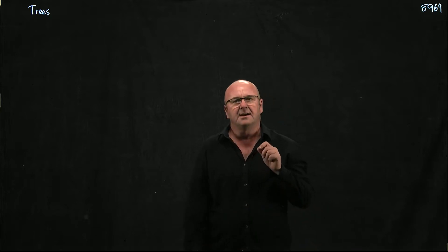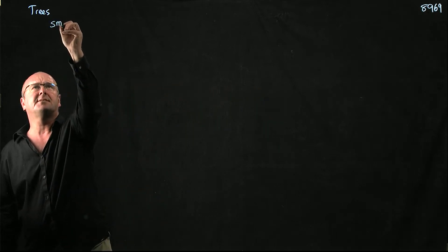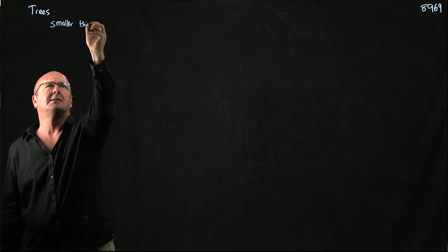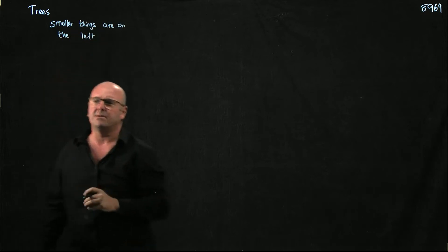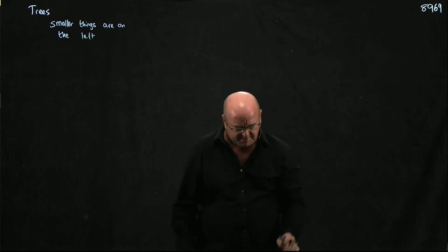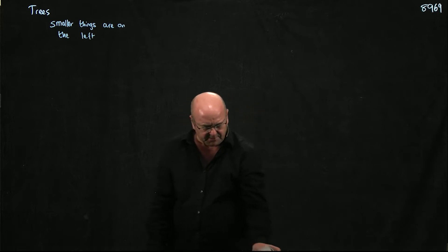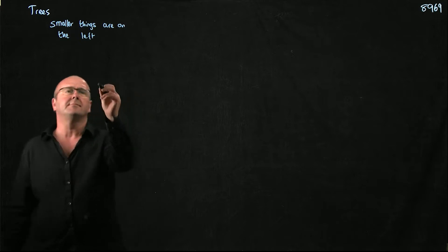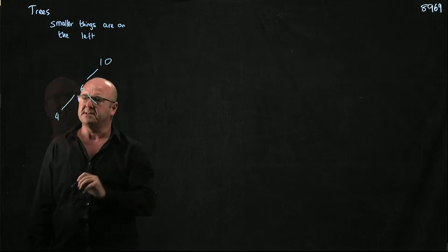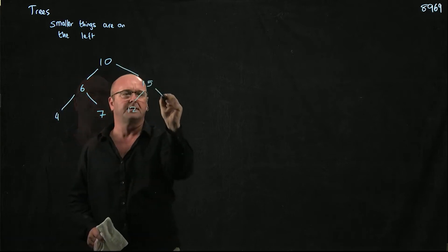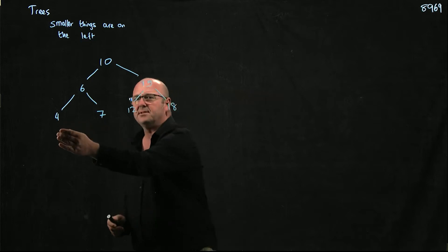I want to talk about trees. In trees we have a different setup, and the rule is that smaller things are on the left and larger things are on the right. Here's a tree — smaller things on the left, larger things on the right.